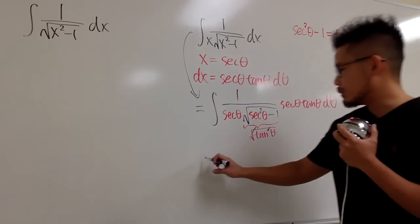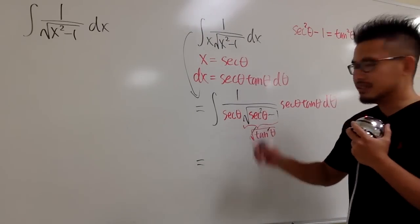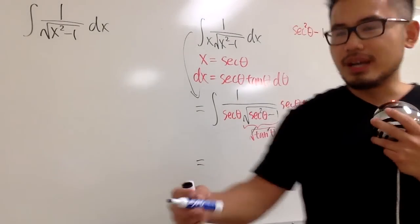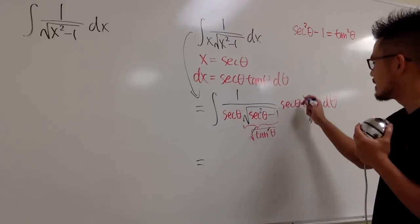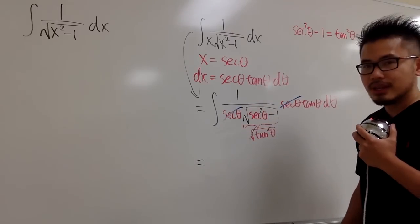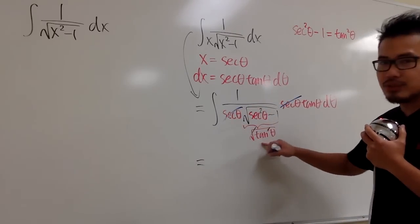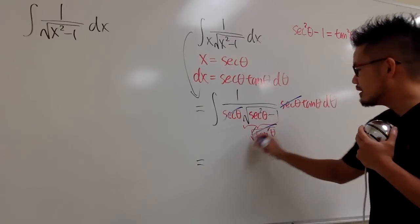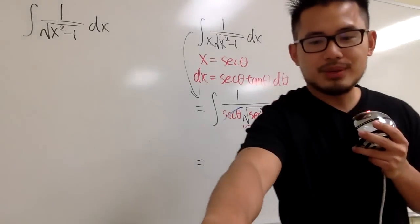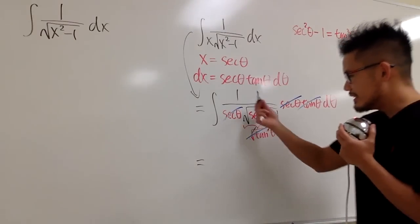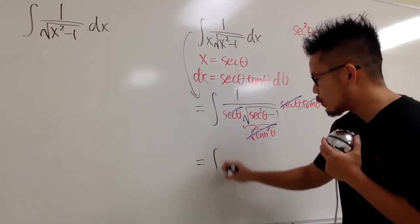And let's see what do we have next. You see, I'm going to just put this down right here for you. We have this secant theta here, but then we have this secant theta here. They cancel each other out. And this is just tangent theta in the denominator. So this and this tangent theta will also cancel each other out, right?